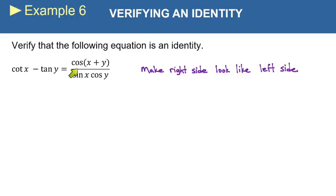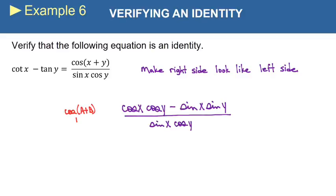And we'll just use our cosine of a plus b identity on this. So we know that cosine of x plus y is going to be cosine x cosine y minus sine of x sine of y. That's copied straight off the formula sheet. And all we did there was use the cosine of a plus b identity, and don't forget your denominator.